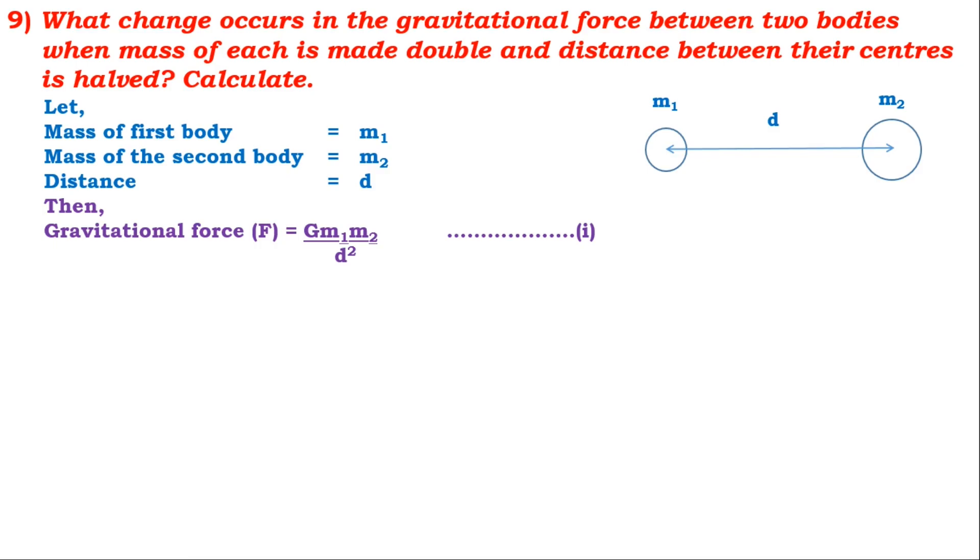But the condition is different. When both masses are doubled, we will have 2M1 in place of M1, and 2M2 in place of M2. And when distance is halved, we have D/2 instead of D.